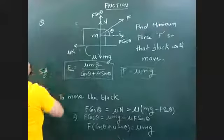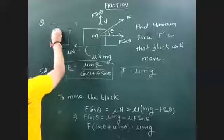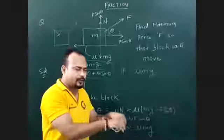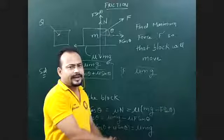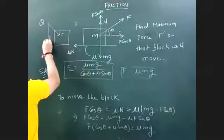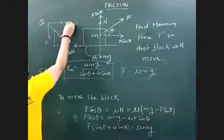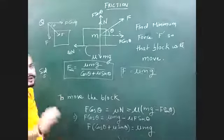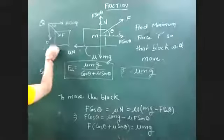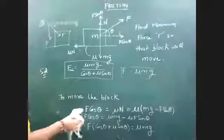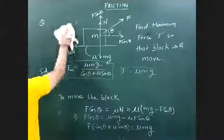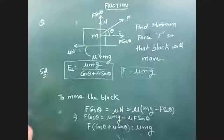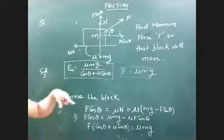When you push the body, a downward force component is added, increasing the normal value and therefore increasing friction. That makes pushing more difficult. When you pull, the upward component reduces normal force and friction, making it easier.